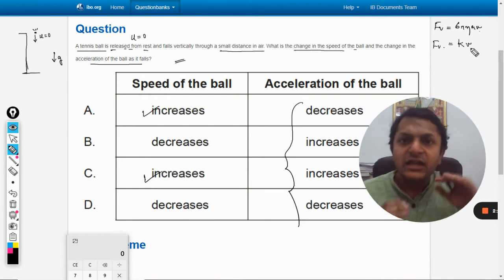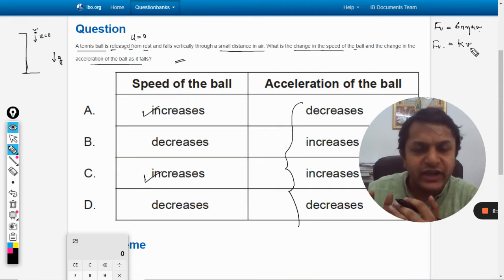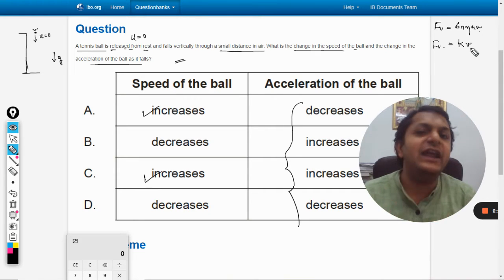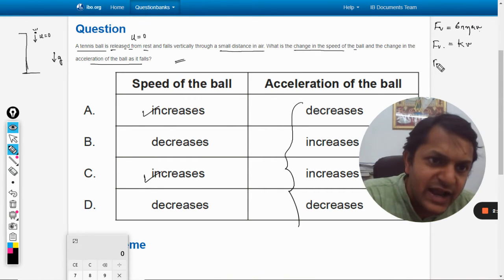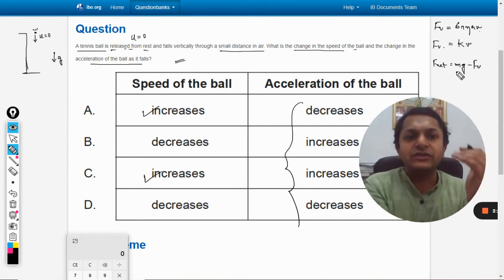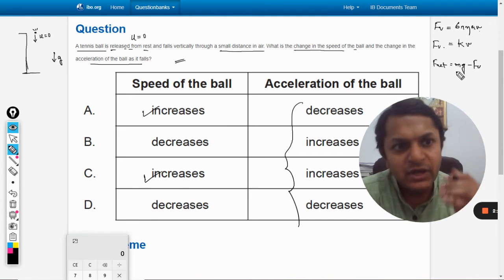The upward force is acting against the weight, so it means the f net is reduced. What is f net? F net is weight minus f_v.